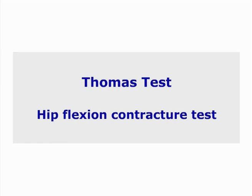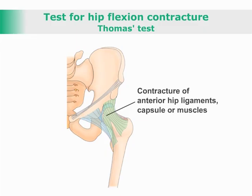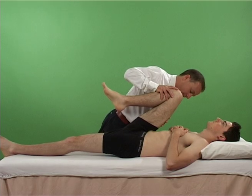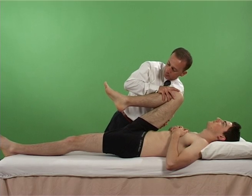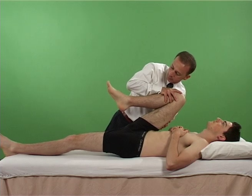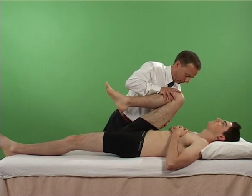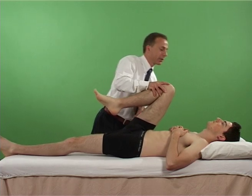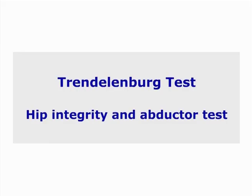Thomas test: a test for contracture of the hip flexors or anterior ligamentous structures. The examiner then flexes one of the patient's hips and knee fully.